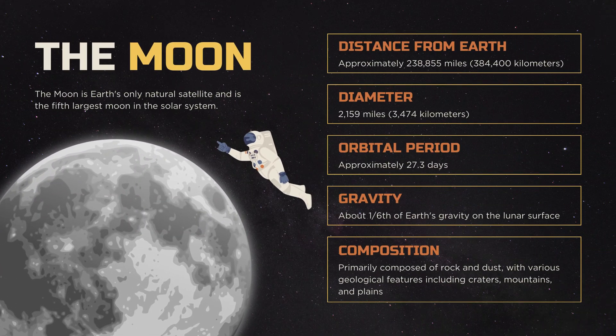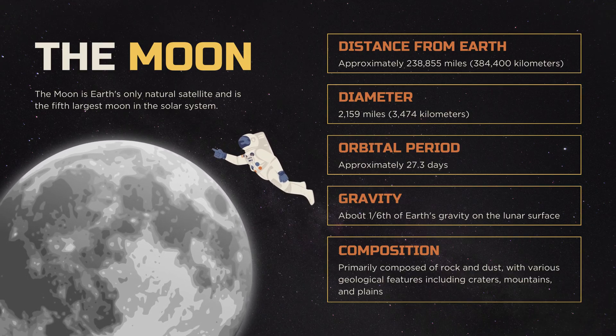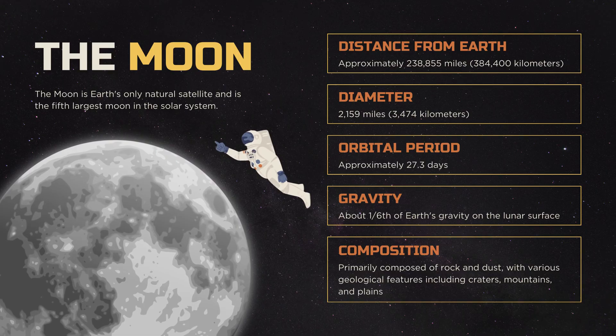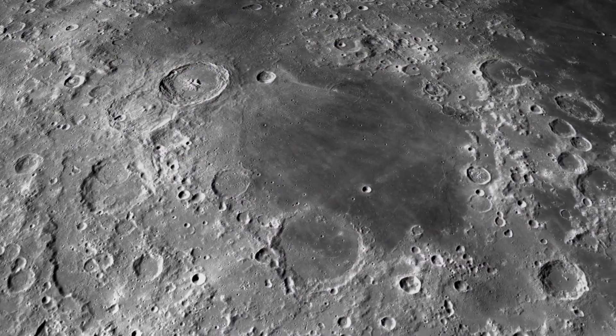The Moon is Earth's only natural satellite and is the fifth largest moon in the solar system. It is primarily composed of rock and dust. It has a variety of geological features, including craters, mountains, and plains.